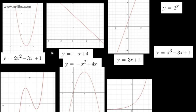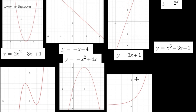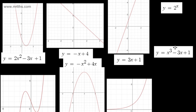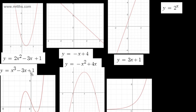That now leaves us with two graphs. We have the graph here and the graph here. This one is a cubic graph. So if we look now at our list, we've got x cubed minus 3x plus 1. We can match that up.